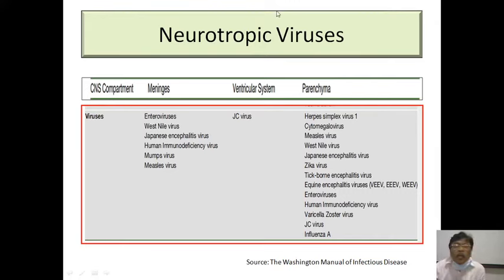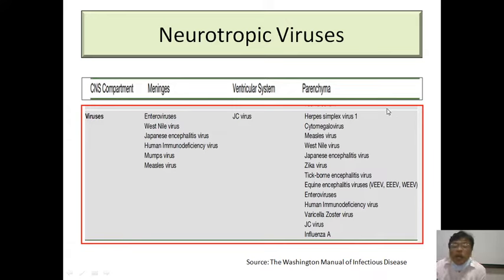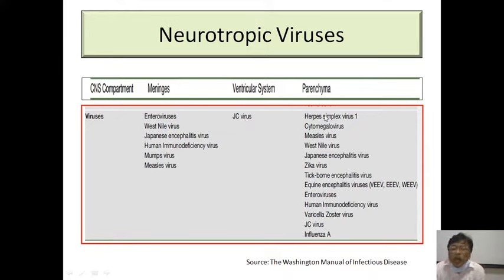Looking at neurotropic viruses, enteroviruses are the commonest cause of meningitis, along with West Nile virus, Japanese encephalitis, mumps, and measles affecting the meninges. In the ventricular system, only JC virus has been found to be very trophic. In the brain parenchyma, a whole plethora of neurotropic viruses exist including herpes, CMV, enteroviruses, and HIV.